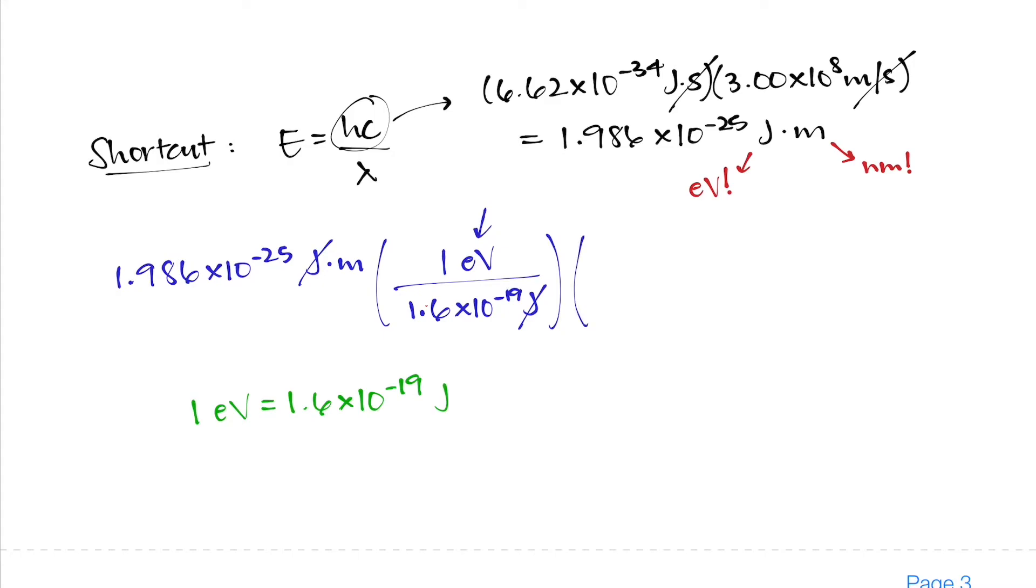And the other conversion factor I have to use is the one for the meters. I want to get rid of meters and replace that with nanometers, so the nanometers will become the unit that I keep in my numerator of that fraction. The conversion factor for nanometers to meters is that 1 nanometer equals 10 to the power of negative 9 meters. So I'll put 10 to the negative 9 in my denominator with the unit of meters there so that the meters in the denominator can cancel with the meters that are up here, leaving me with just nanometers.